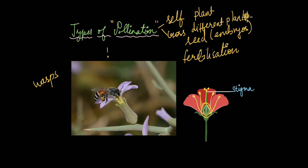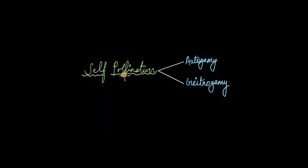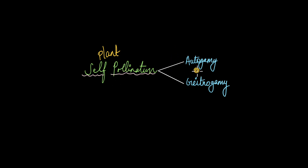Let's take a closer look at self-pollination first, and then we'll talk about cross-pollination. Self-pollination involves the transfer of pollen grains within the same plant, but self-pollination itself is divided into two different categories: autogamy and geitonogamy.